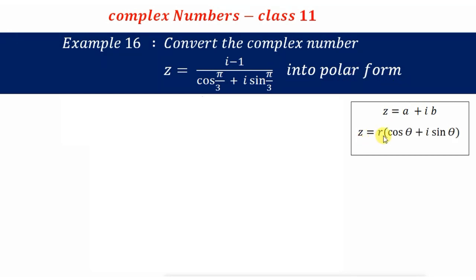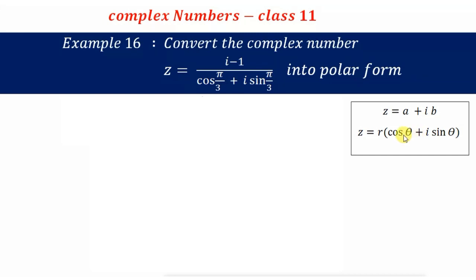The polar form of a complex number Z is equals to R cos θ + i sin θ. To convert to polar form, we need to find the value of R and θ. After we find these values we put them in this equation and get the polar form. First convert the given complex number into standard form, then find R and θ, and put those values in the equation.